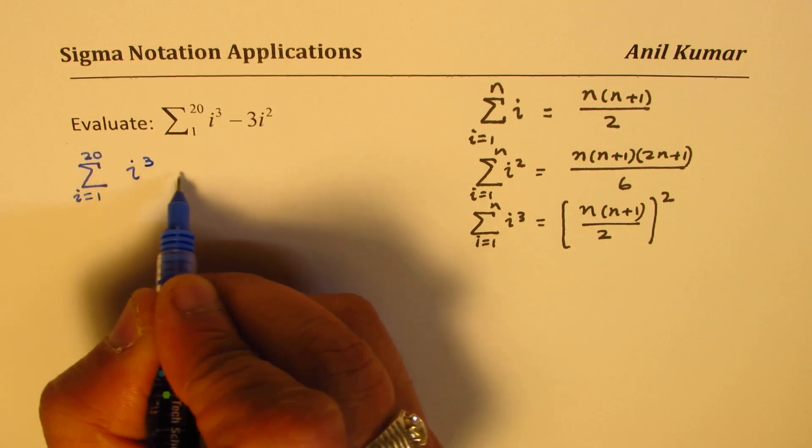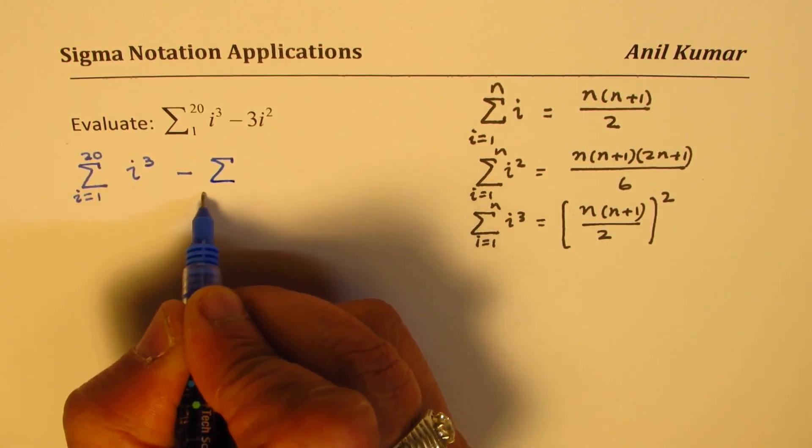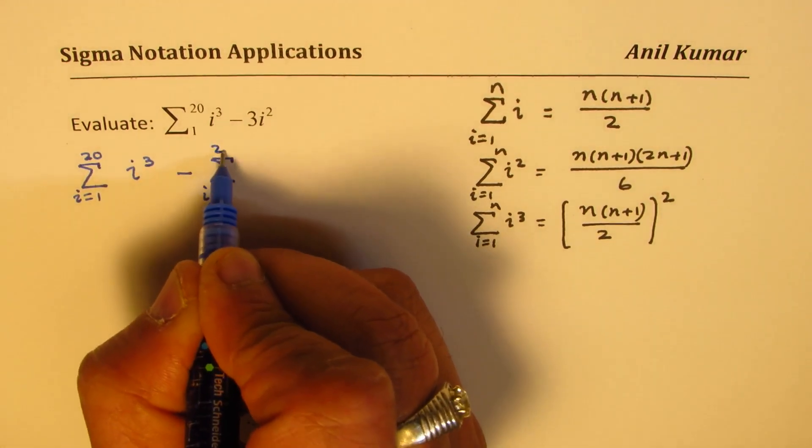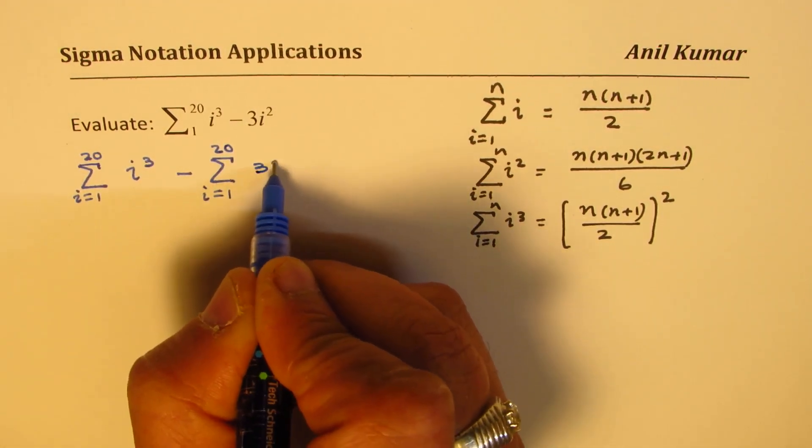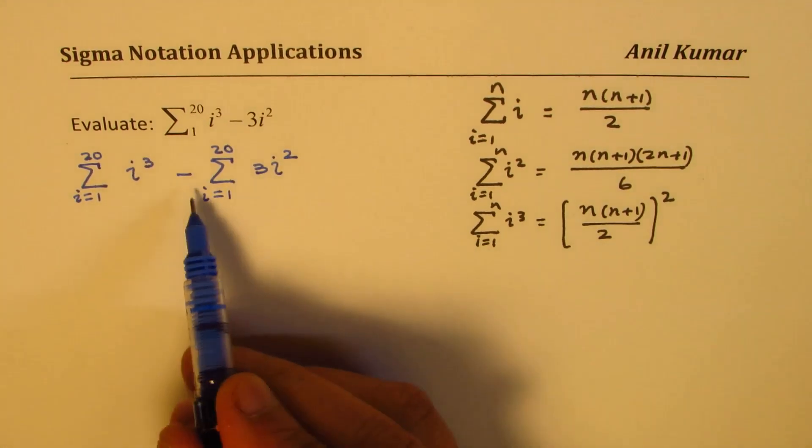i cubed. And also, we need to sum from i equals 1 to 20, 3i squared. Now, 3 is a common factor. So it can be taken out.